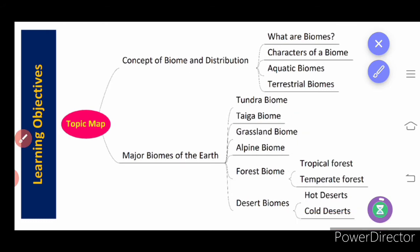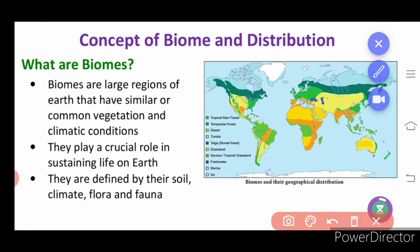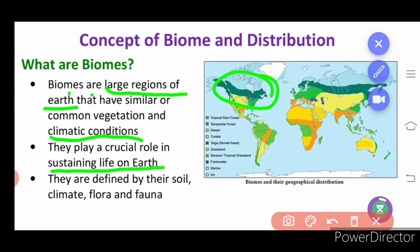What is a biome? Biomes are large regions of the earth that have similar or common vegetation — the same types of plants — based on the climatic conditions there. It is a larger area having the same type of vegetation due to climatic conditions, and these areas play a crucial role in sustaining life on the earth. Biomes are defined by their soil, climate, flora, and fauna. Flora includes all plants; fauna includes all animals.